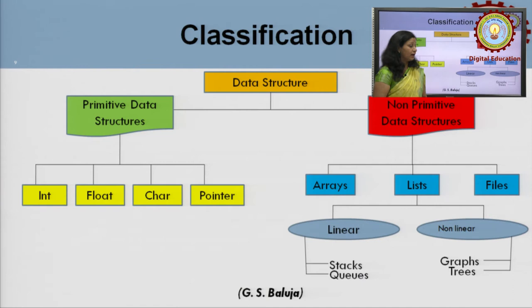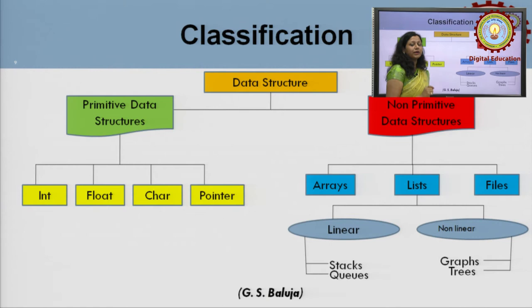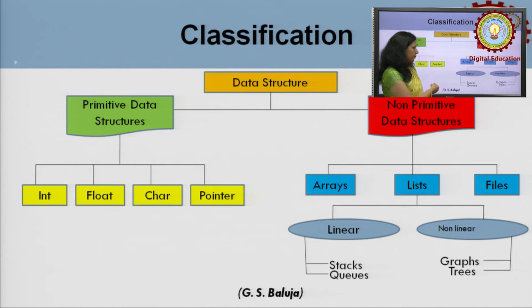What is a linear data structure? When data is organized in a sequential manner, it is called a linear data structure. Non-linear data structure means data is not organized sequentially — its representation is either in the form of a tree or a graphical representation. We will go through all these topics one by one and see a brief introduction to each.